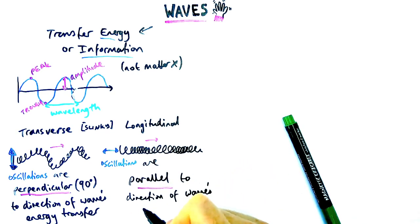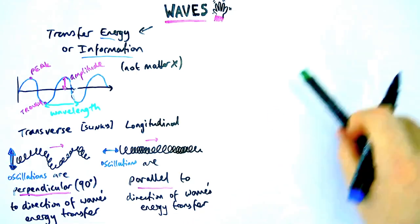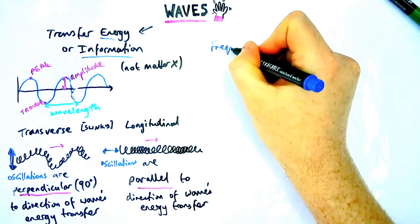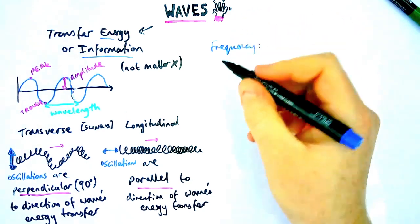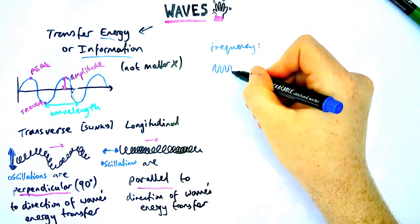I haven't written it down here, but it's really important to note some examples. Longitudinal would be sound waves or ultrasound. Transverse would be any wave on the electromagnetic spectrum, which we'll come on to in a future video.